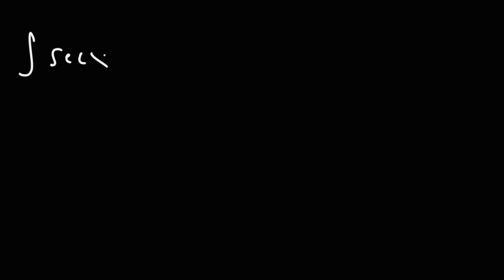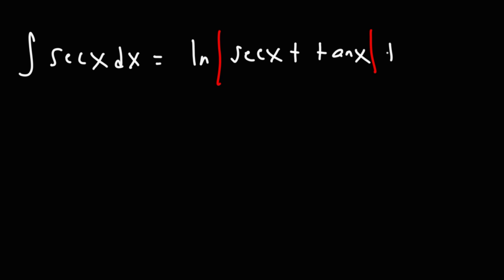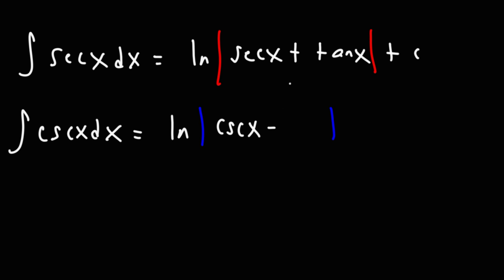The indefinite integral of secant x dx is going to be the natural log of the absolute value of secant x plus tangent x, plus c. The indefinite integral for cosecant x is very similar — we're going to have a natural log function, but instead of secant it's going to be cosecant, and instead of plus we have minus, and instead of tangent we have cotangent.